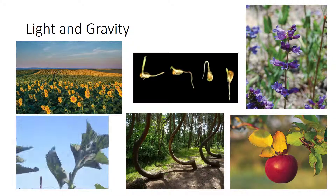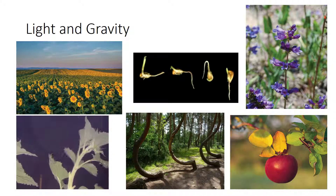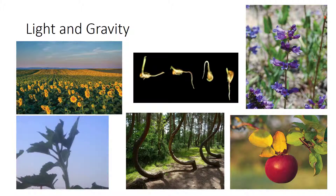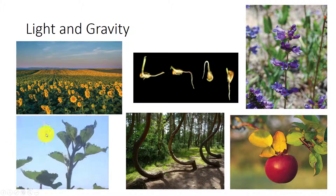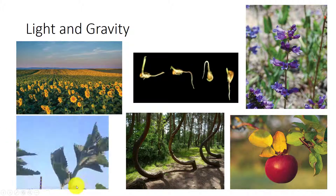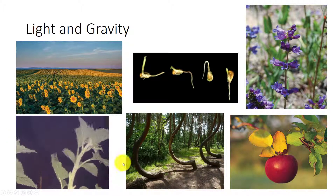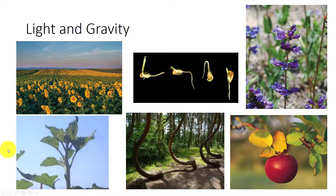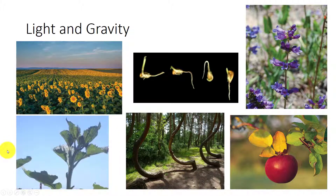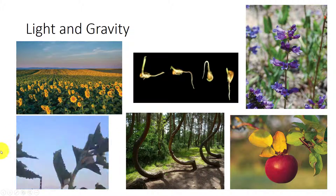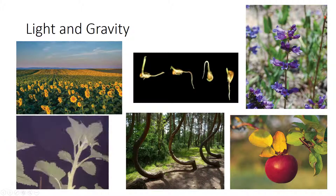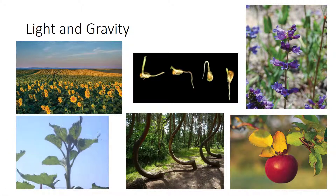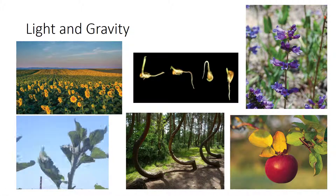Light provides two important types of information about the environment. The direction of light, or gradient of light, allows the plant to orient its leaves towards the source. The duration of light, or length of the day, provides information about the time of the year.